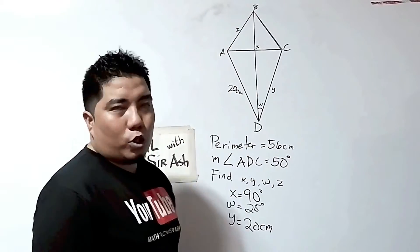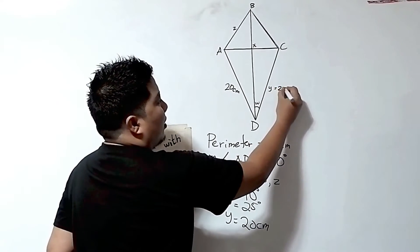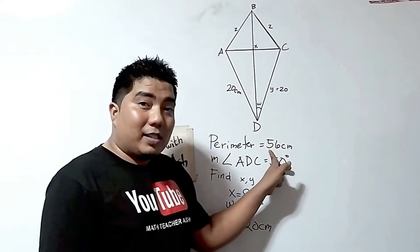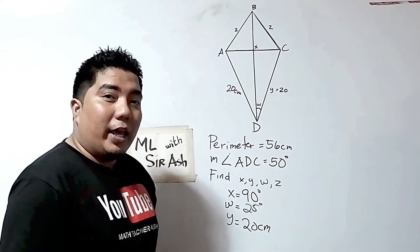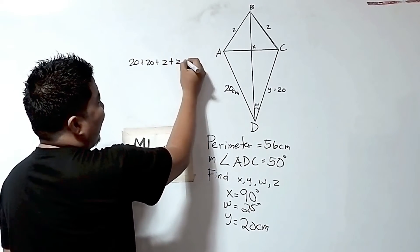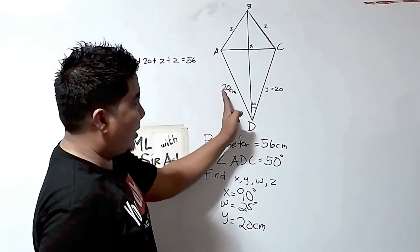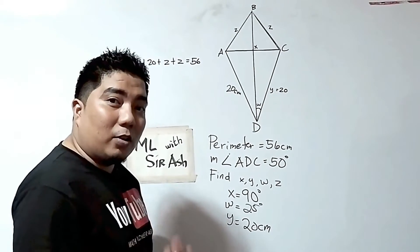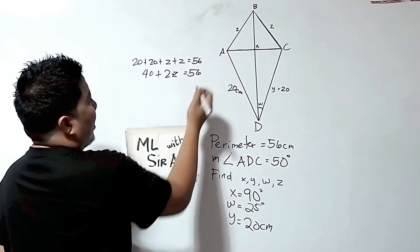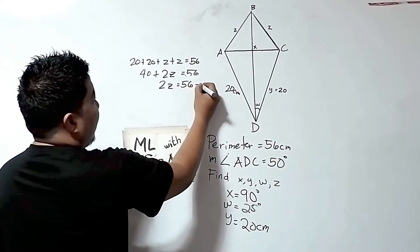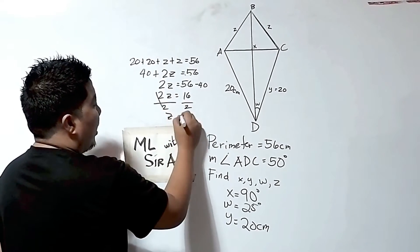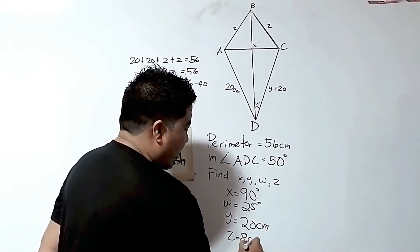Now we have Z. If this side is 20 and Z is the unknown side, we can make use of the given perimeter. The perimeter is the total measurement of all the sides. So: 20 plus 20 plus Z plus Z equals 56 centimeters. That gives us 40 plus 2Z equals 56. Transposing: 2Z equals 56 minus 40, which is 16. Divide both sides by 2 and Z equals 8. Therefore, the measurement of Z is 8 centimeters.